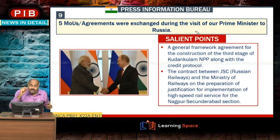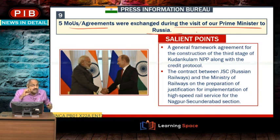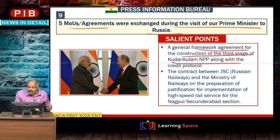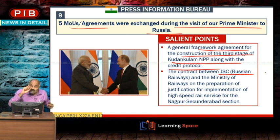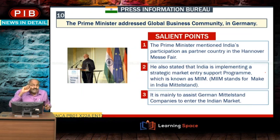Five MOUs were exchanged during the Prime Minister's visit to Russia. A general framework agreement was signed for the construction of the third stage of the Kudankulam Nuclear Power Plant — which is assisted by Russia and located in Tamil Nadu. A contract was also signed between Russian Railways and the Ministry of Railways on preparation of justification for implementing high-speed rail service between Nagpur and Secunderabad.